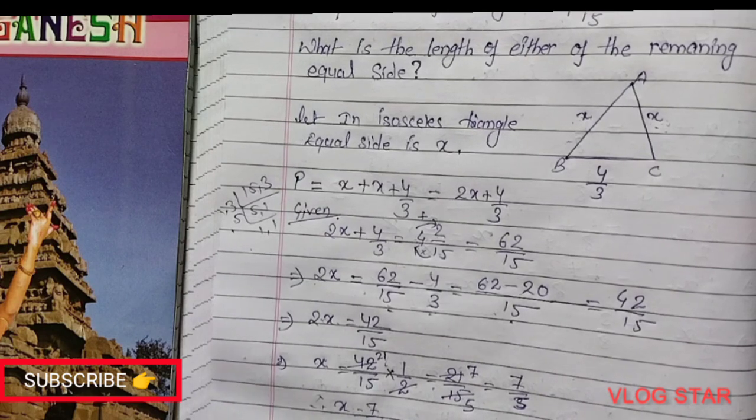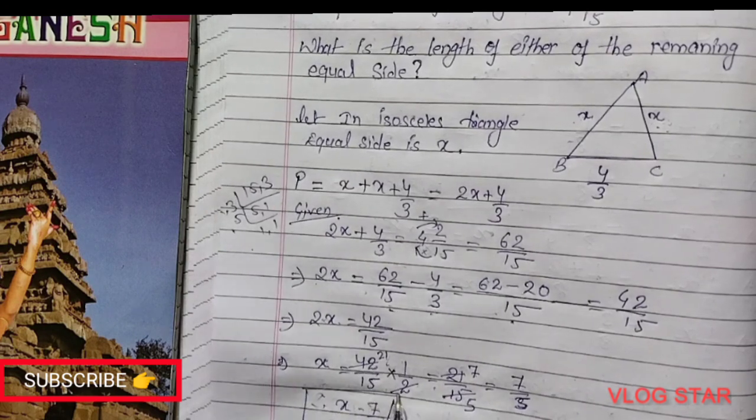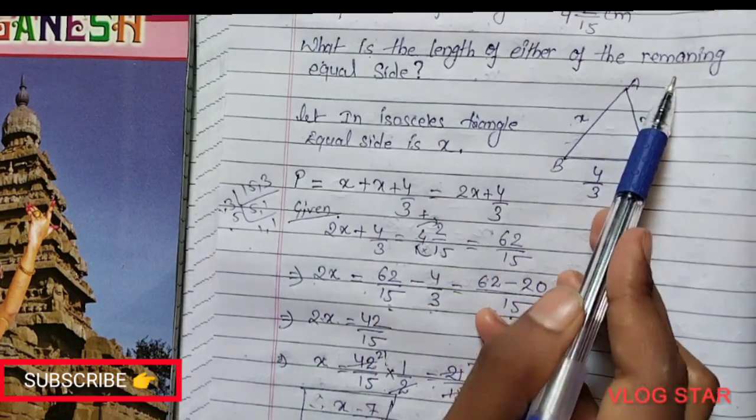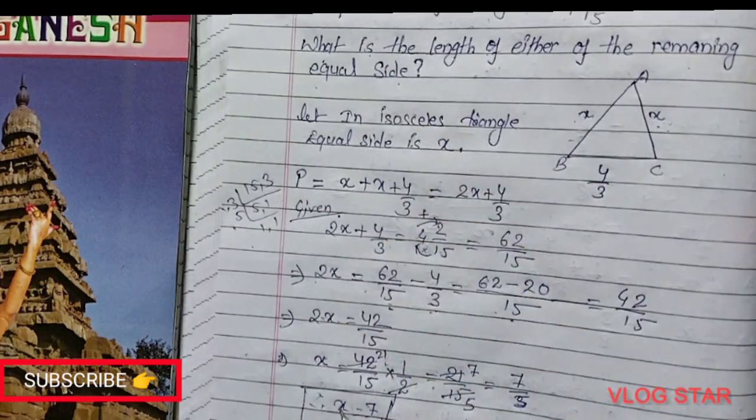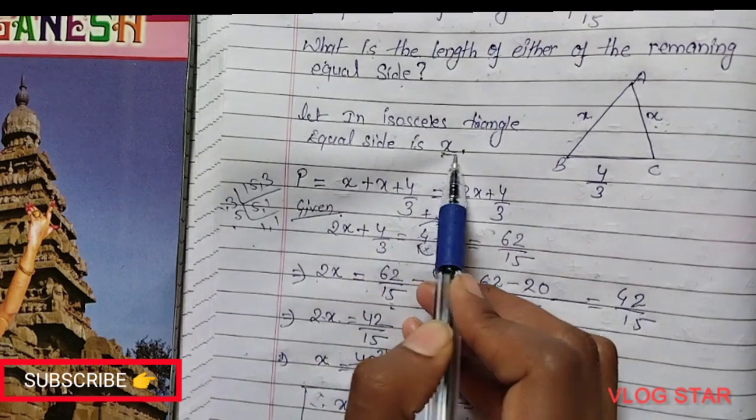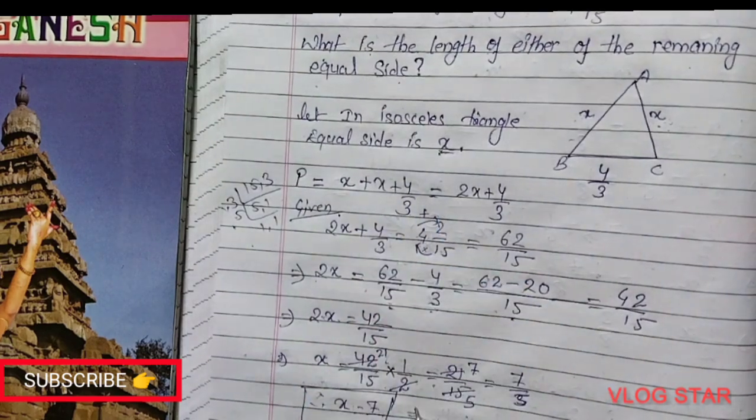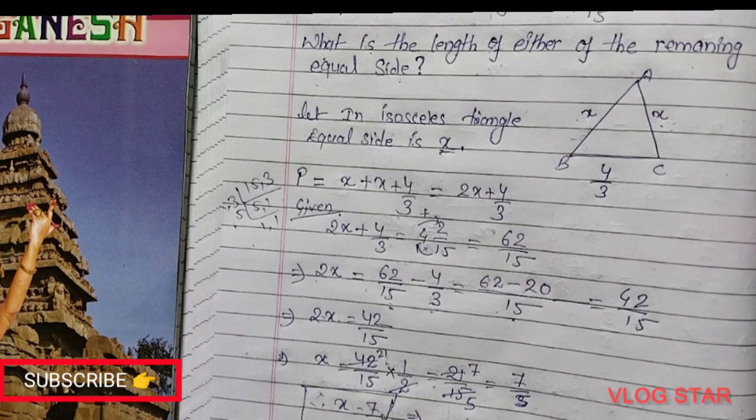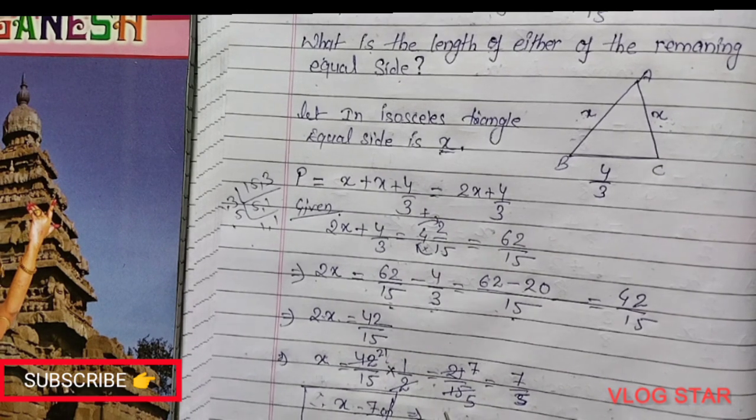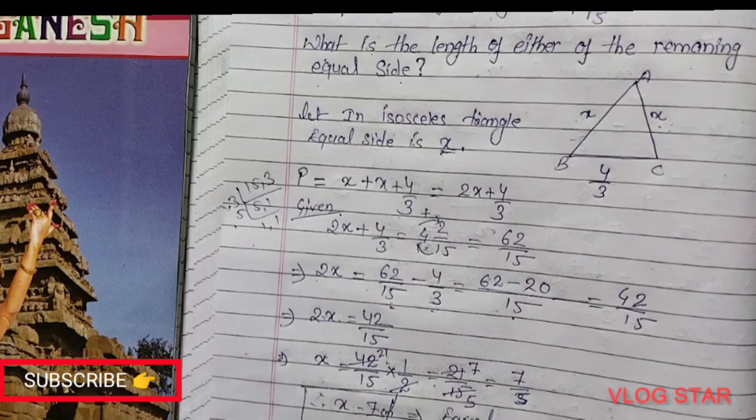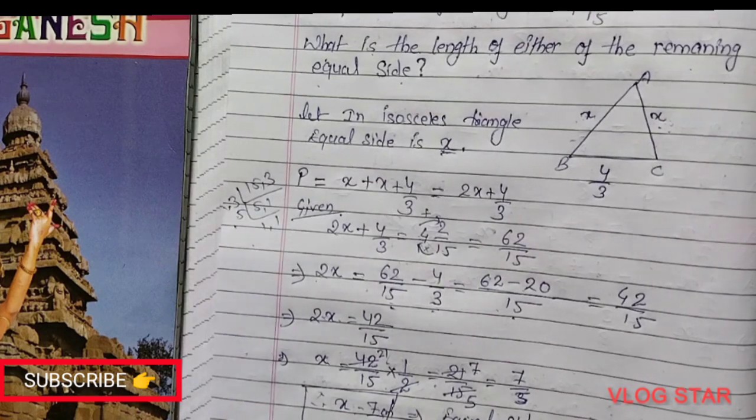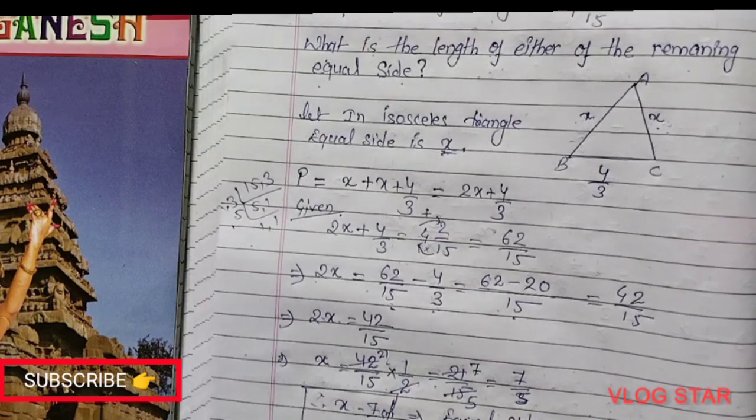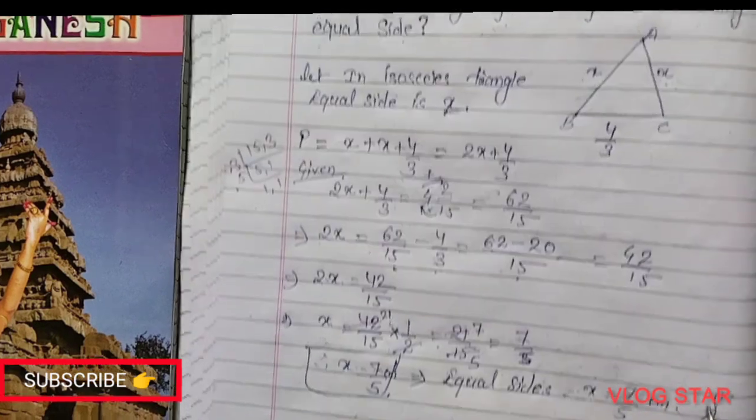Therefore the value of X is 7/5. What we have to find in the question is the length of either of the remaining equal sides. Here I let X be the equal side, so the answer is X equals 7/5 centimeter. The equal side is 7/5 centimeter. Hope you get it.